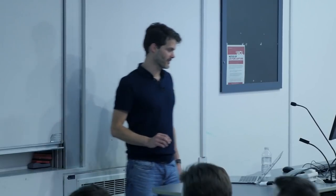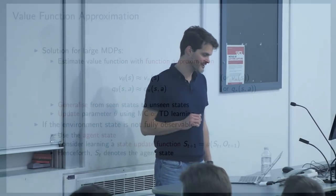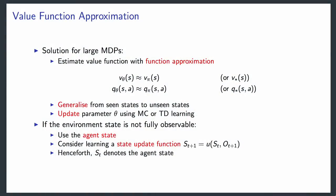The solution we're proposing is to estimate these things with some function. The notation I'll use is that there's some theta parameter—you can think of this as all the weights of your neural network. The idea is to approximate the true value of a policy. This also points towards a means to do control, since generalized policy iteration involves first estimating the value of a policy and then improving it.